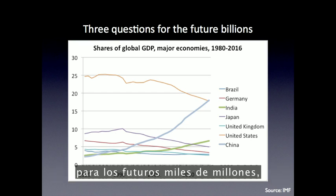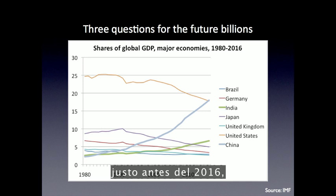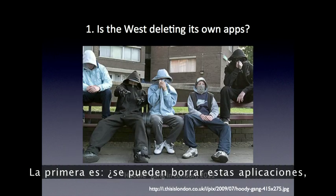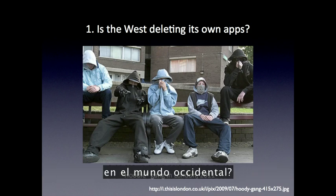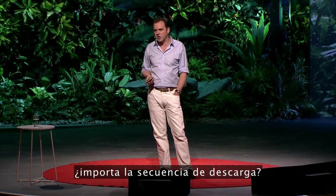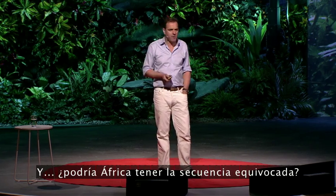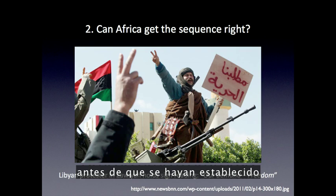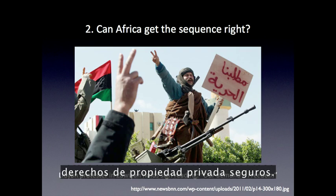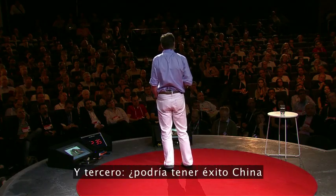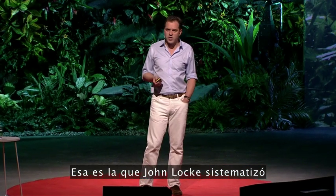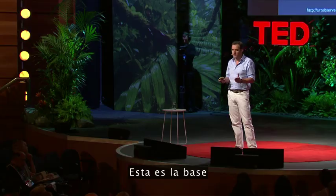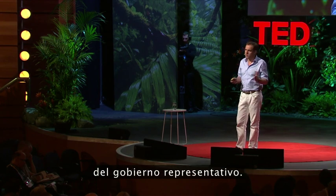So I want to end with three questions, for the future billions, just ahead of 2016 when the United States will lose its place as number one economy to China. The first is: can you delete these apps, and are we in the process of doing so in the Western world? The second question is: does the sequencing of the download matter, and could Africa get that sequencing wrong? One obvious implication of modern economic history is that it's quite hard to transition to democracy before you've established secure private property rights. And third: can China do without killer app number three? That's the one that John Locke systematized when he said that freedom was rooted in private property rights and the protection of law — the basis for the Western model of representative government.